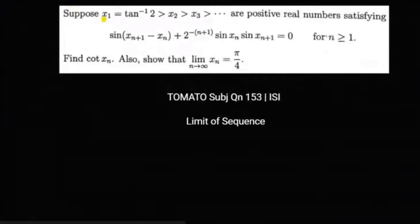We can see that x₁ = tan⁻¹(2), which is greater than x₂ greater than x₃ — it seems this is a monotone decreasing sequence. The x_n are a monotone decreasing sequence of positive real numbers satisfying this criteria for n ≥ 1. We need to find cot(x_n) and then find the limit.